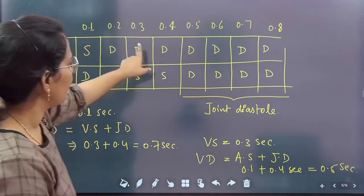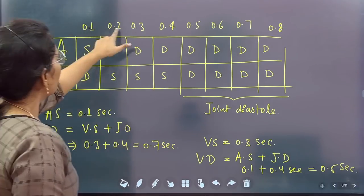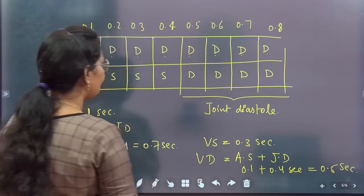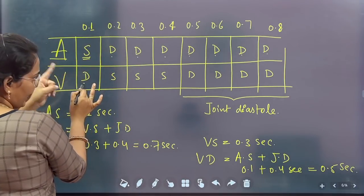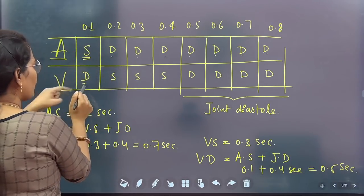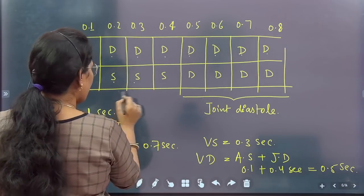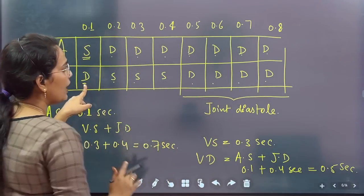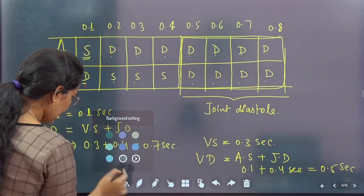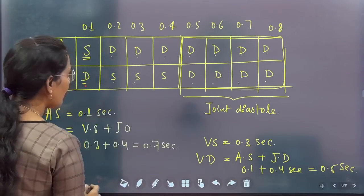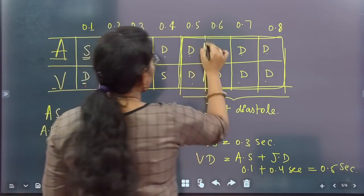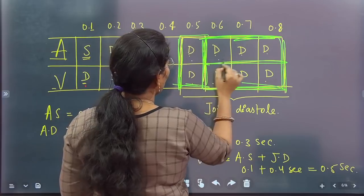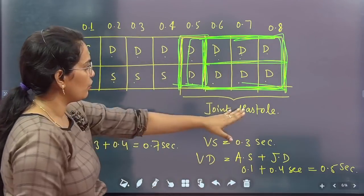Looking at this diagram, all confusion will clear. There is one moment — an overlap — where all four chambers are relaxing together. This period is 0.4 seconds, and it is called joint diastole. So I have written it in this way — such questions can be asked directly: what is atrial systole, what is atrial diastole? You need to remember these durations.